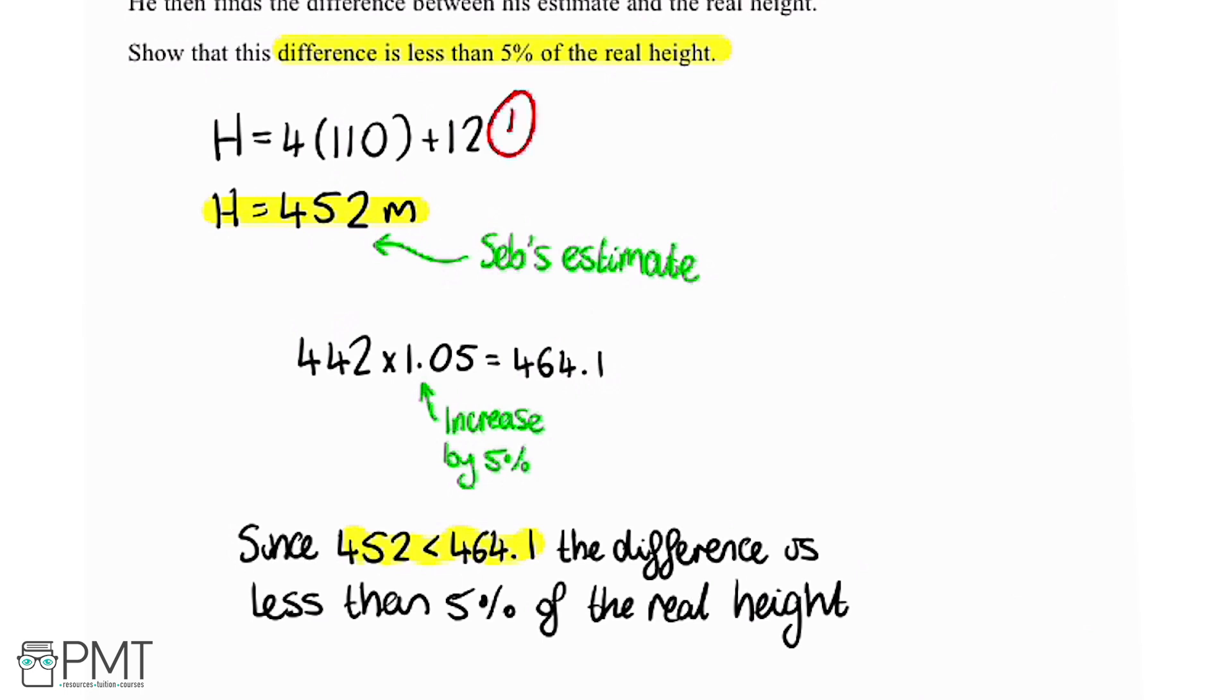We get our first mark for substituting into the formula, the second mark for finding that it equals 452. Our third mark for our working here, and fourth mark for a final correct concluding statement.